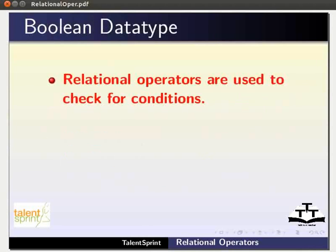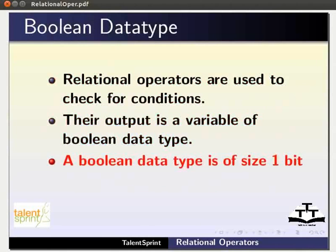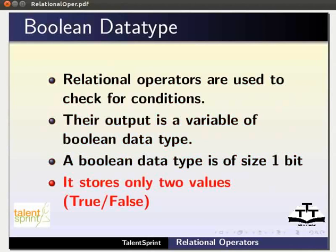Relational operators are used to check for conditions. Their output is a variable of boolean data type. A boolean data type is of size 1 bit. It stores only two values: true or false. True is the output when the condition is true, and false is the output if the condition is not true.